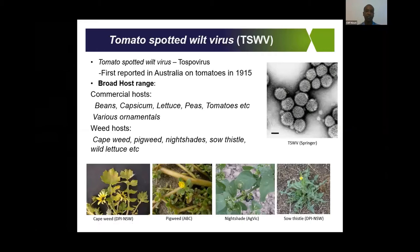Tomato spotted wilt belongs to this genus of virus known as TOSPO viruses, and they're characterized by circular rings — that's an electron microscope image. It was first reported in Australian tomatoes in 1915 in the Werribee and Bacchus Marsh area, and since then it's been found all over the world.